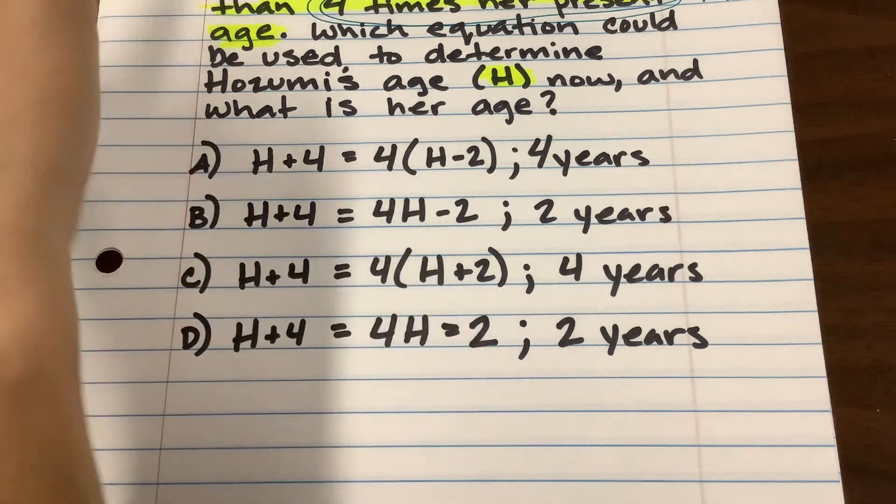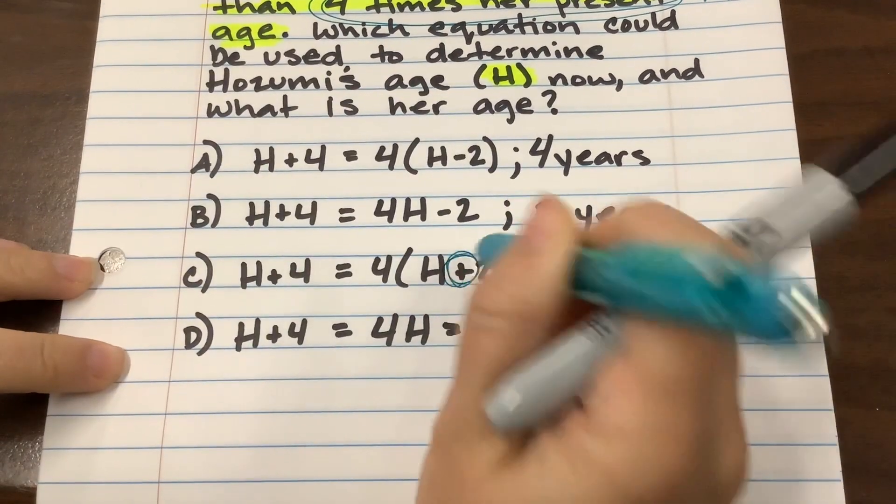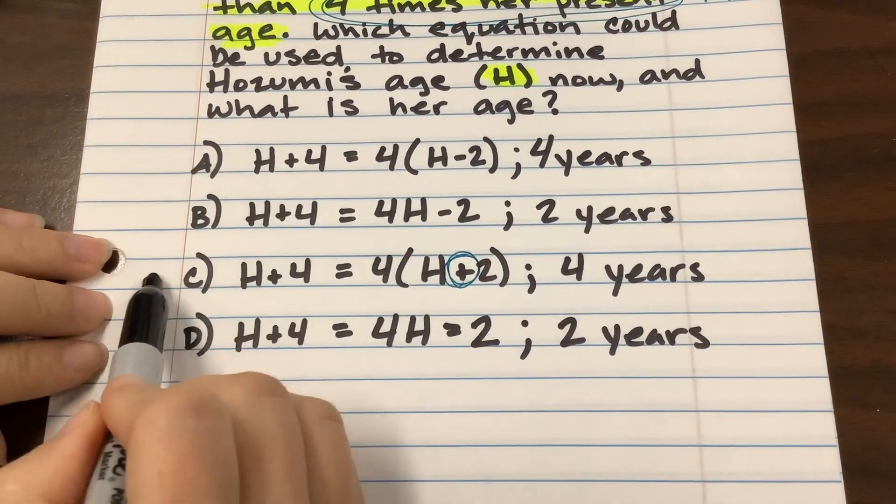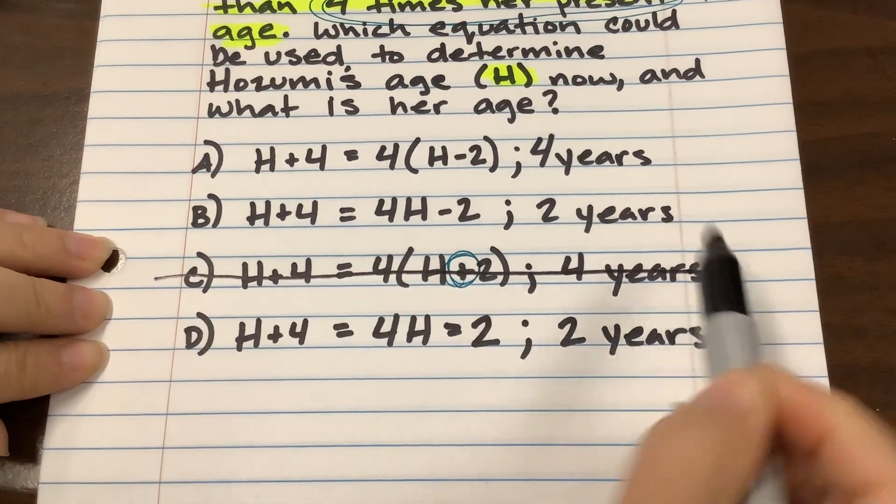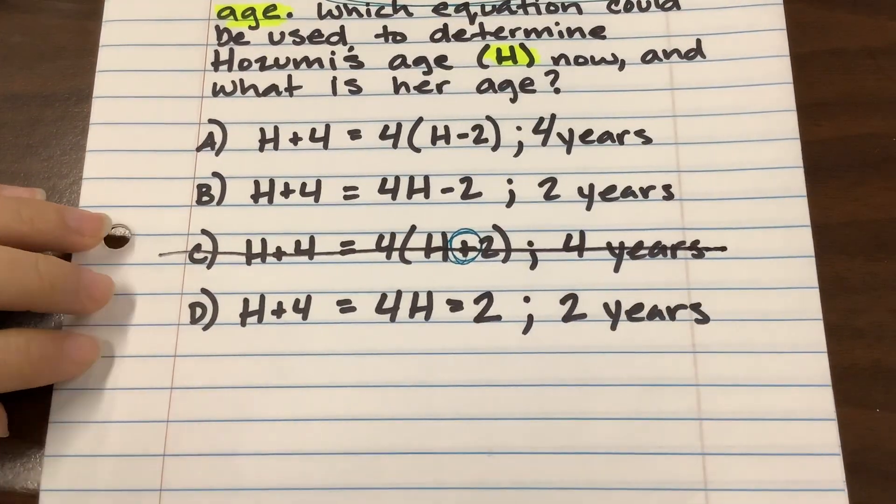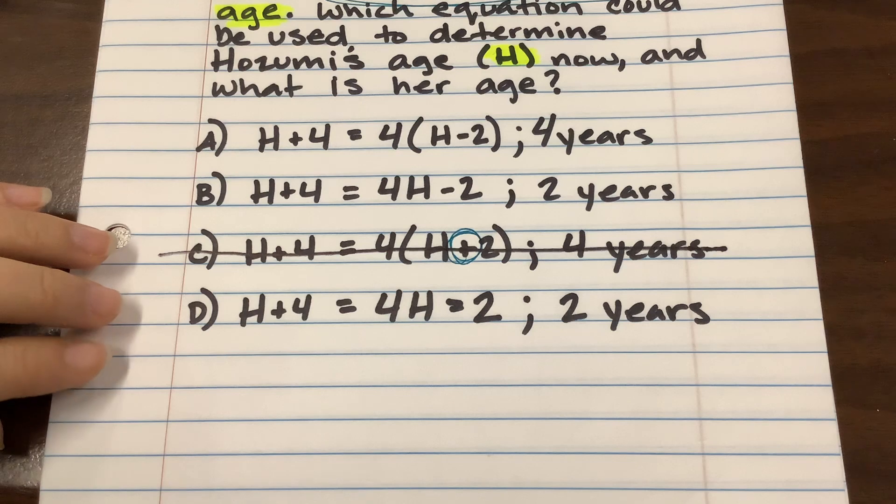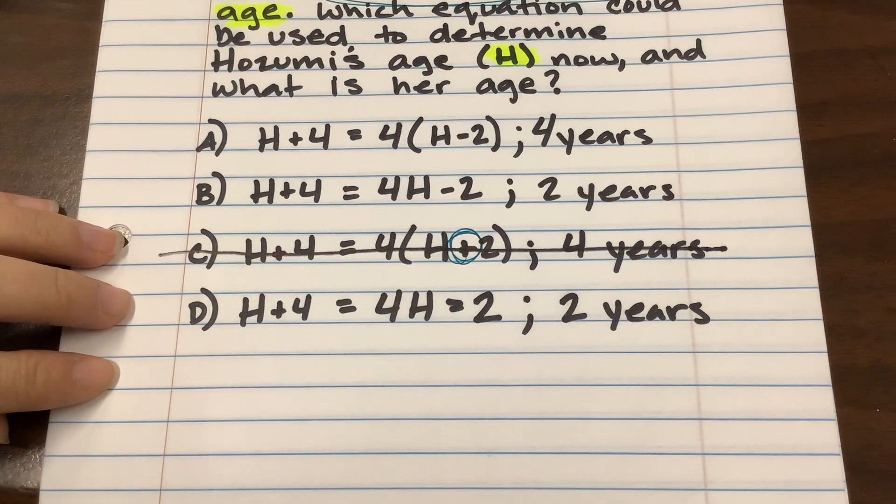Well, definitely C because it has this plus sign, right? Okay, so not C. And why would we get rid of D?